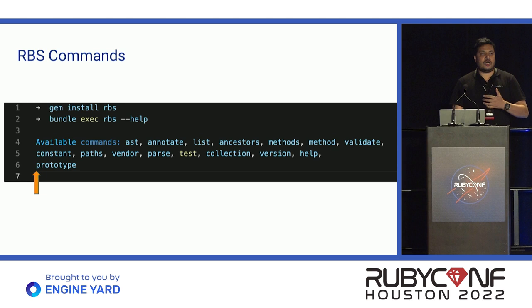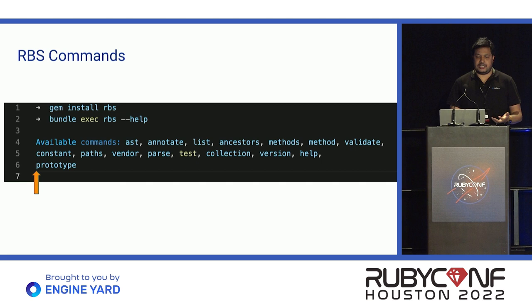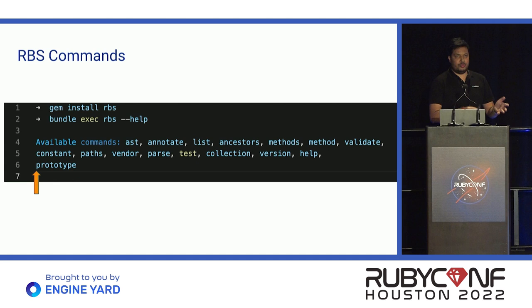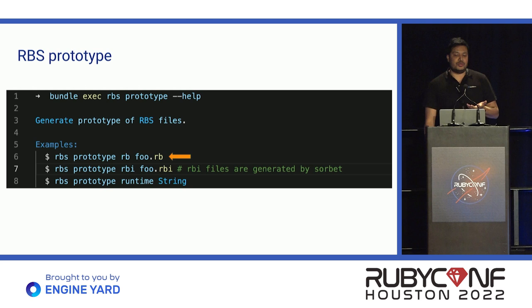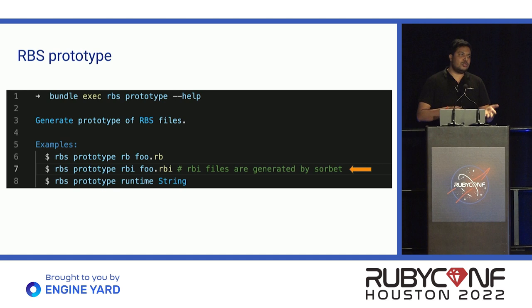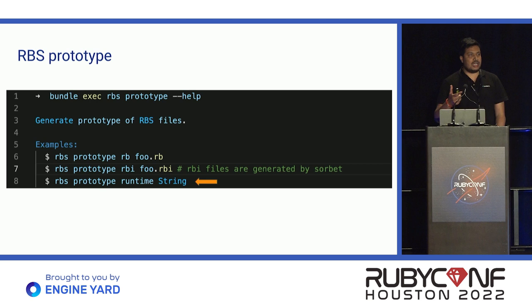RBS comes with a lot of options for parsing code, seeing what kind of AST it generates, how to annotate, list, and probe the ancestors of a Ruby class. In the scope of this talk, we are mostly concerned about generating code for our Ruby code, so we'll focus on the prototype option. RBS prototype comes with three options: RB, RBI, and Runtime. RB uses syntactical parsing of the Ruby code. RBI converts Sorbet RBI files into RBS. Runtime loads your class into memory and then generates the RBS code by identifying what functions, methods, and attributes are defined on that class or object.